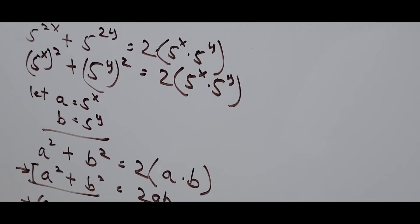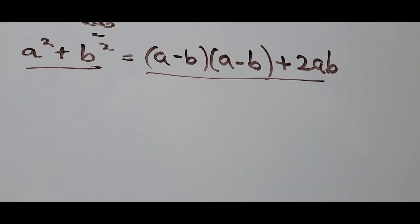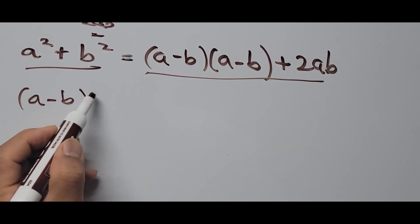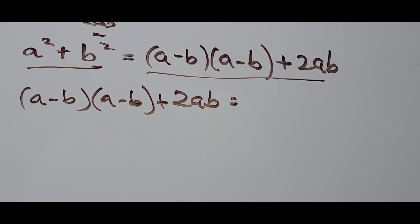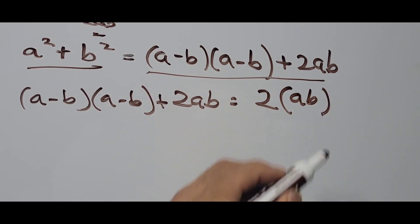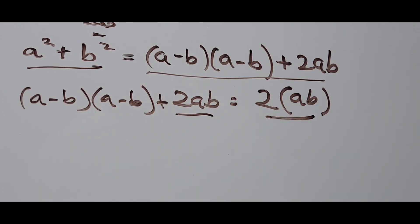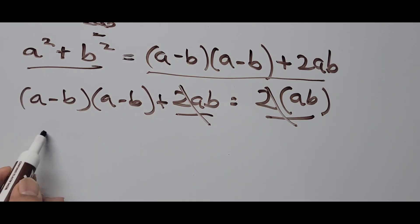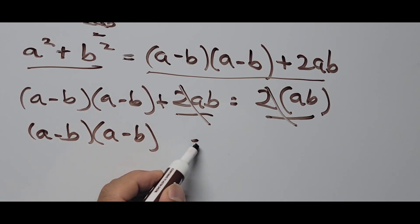So we have (a minus b) times (a minus b), plus 2ab, equals 2 times ab. The 2ab on the left cancels with 2ab on the right — since transposing gives negative 2ab — and we end up with (a minus b) times (a minus b) equals zero.